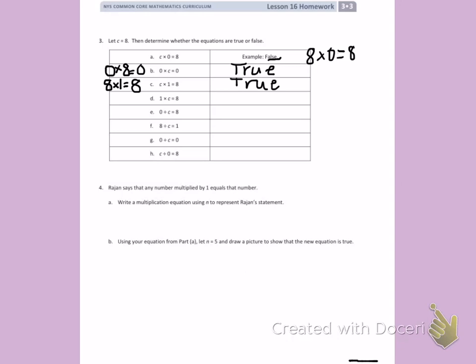Letter D, 1 times C equals 8. Remembering that C is 8. This is the commutative property from letter C, so it is again true.